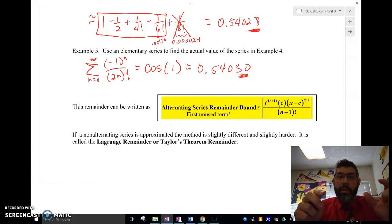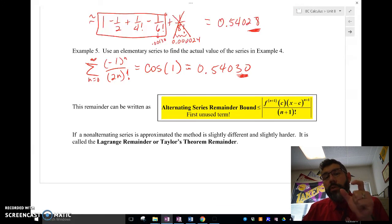So the first unused term is going to be our, is going to be, is going to, whatever that value is, the error is going to be less than or equal to that. So you can write it like this that I have here highlighted.